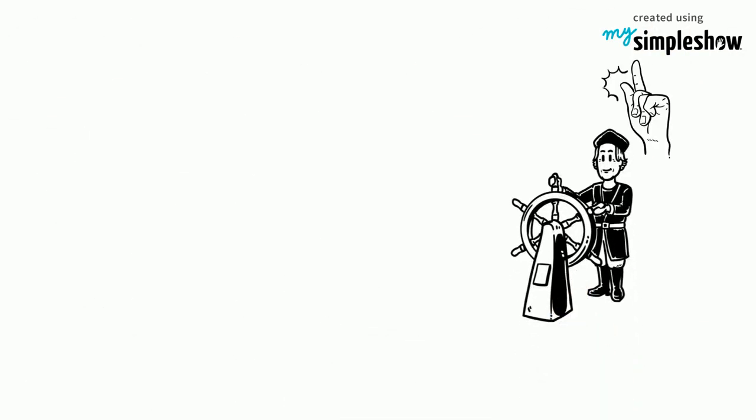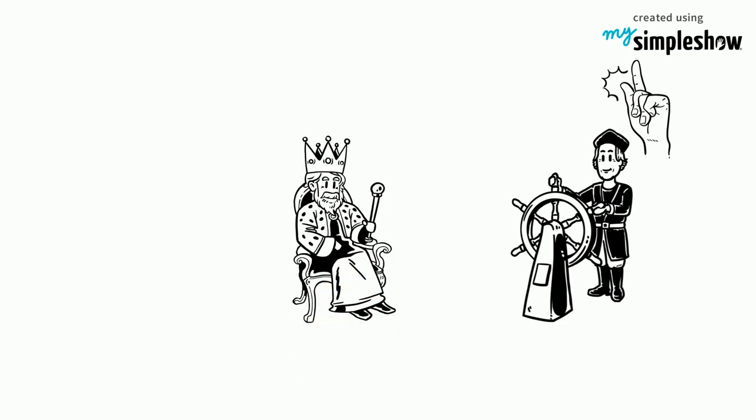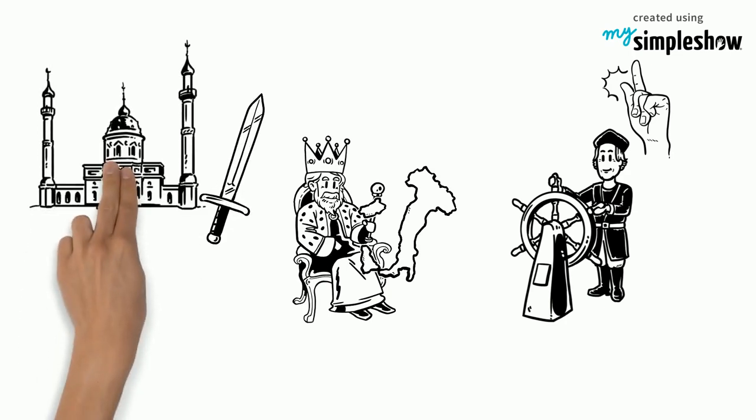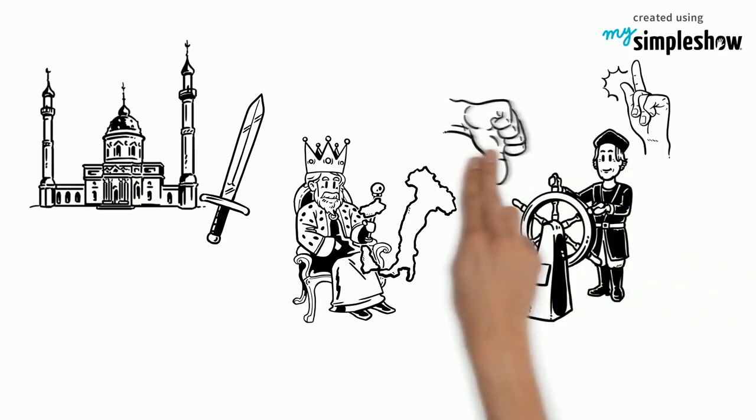Columbus proposed a three-ship voyage of discovery across the Atlantic, first to the Portuguese king, then to Genoa and finally to Venice. They were focused on a war with the Muslims, so they initially rejected Columbus.